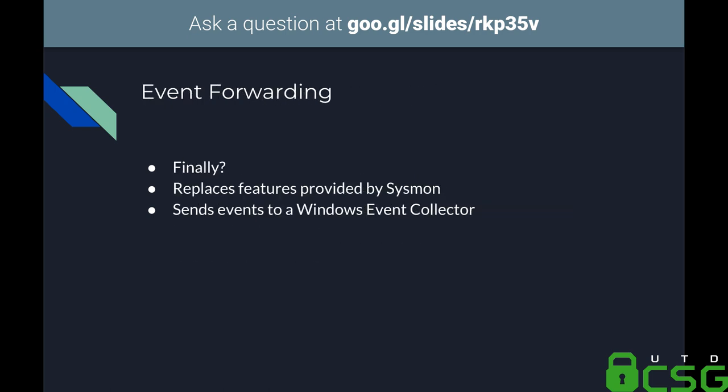Event forwarding is finally a well-supported feature in Windows, previously provided by Sysmon. It's now integrated into the Windows Event Collector, allowing you to stream logs off the local machine. This matters because an attacker with administrator access can wipe or forge local logs, but if logs are being streamed to a separate trusted server, you can still trust those remote logs even if the local machine has been compromised.